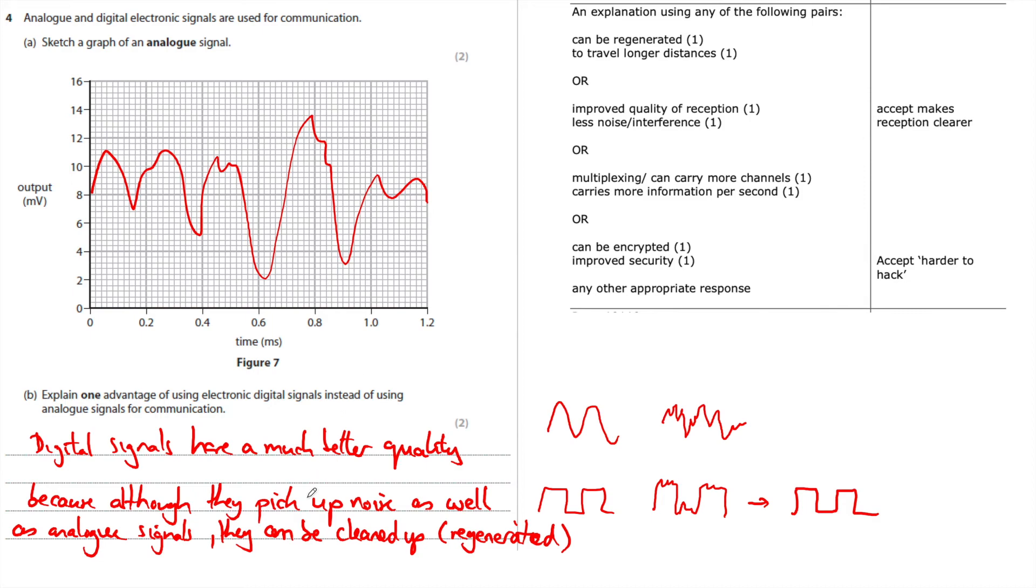And here are the other things you could have said. Remember, each thing must be a paired answer. So why is it better and explaining it. So you could have, can be regenerated to travel longer distances. Improved quality of reception, so less noise or interference. That's really the same thing. Multiplexing. Remember, digital signals can be multiplexed, which means they can carry more channels, so they can send more information per second, whereas analogue signals can't be. And finally, this one, I'm not sure about that pairing, really, but remember, digital signals, because they are on the whole light signals, they cannot be intercepted, whereas radio signals or electrical signals produce a magnetic field, and so they can be hacked, they can be listened into. So this is much more secure. But I think that is the best one to choose.